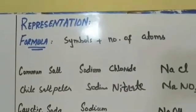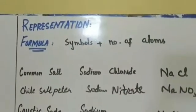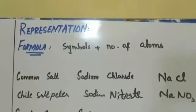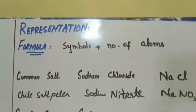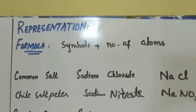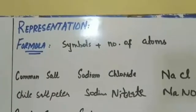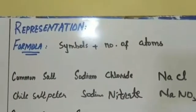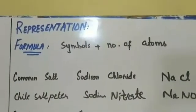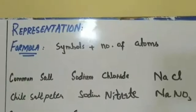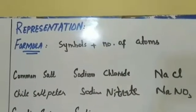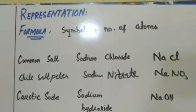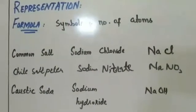Now, how can we represent a compound? A compound can be represented by a formula. A formula tells us about the symbols of the elements and also the number of atoms. For example, H2O tells us that hydrogen and oxygen are combined. From the symbols we know which elements are present, and from the numbers we can see that two hydrogen atoms and one oxygen atom are combined.